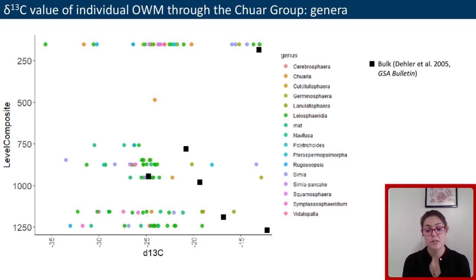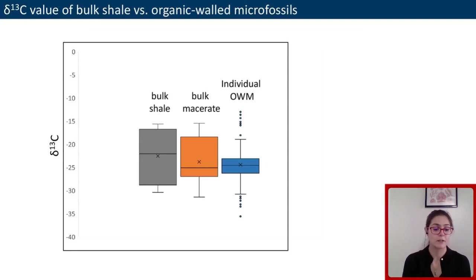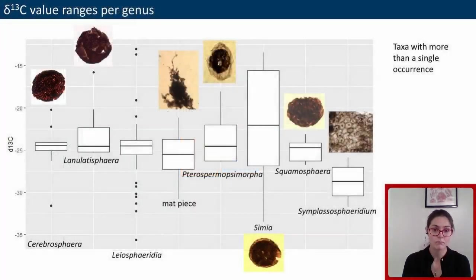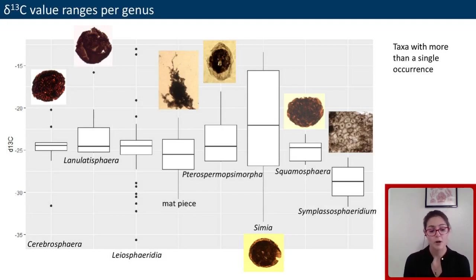This variation suggests that individual microfossils took up carbon of different values. If we compare isotopic values of bulk shale, bulk macerate, and individual microfossils, the fossils have a very broad range — both heavier and lighter than the bulk — suggesting that microfossils incorporated carbon from various sources. For a lot of taxa, even within a taxon, there is quite a bit of variation. The broadest range is seen in Leiosphaeridia, which are smooth spheres present throughout the Precambrian and likely polyphyletic, meaning a simple form could represent a variety of species.